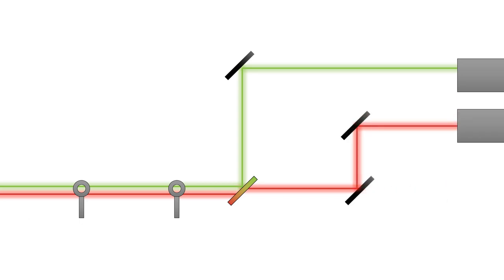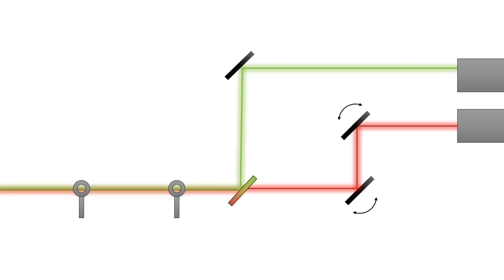What we need is another pair of steering mirrors for the red beam path. The alignment sequence is now green steering first, then red steering.